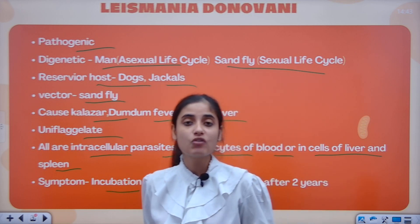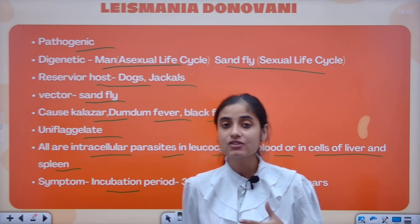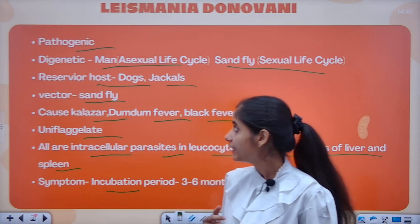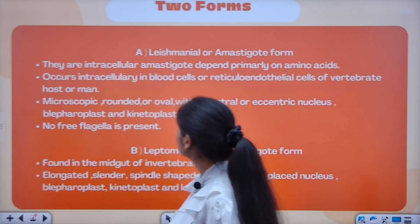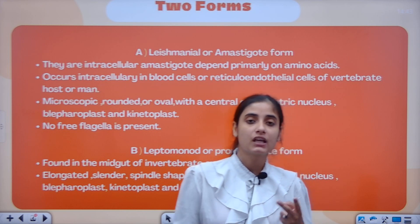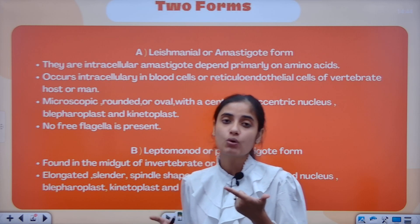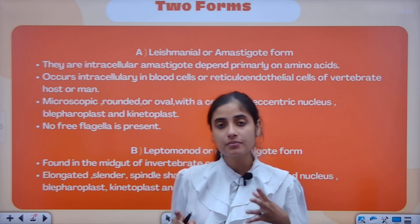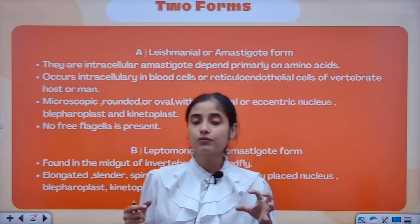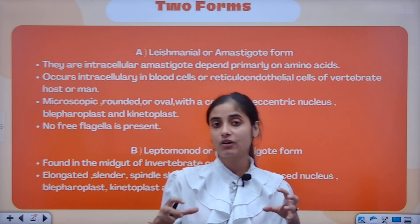In 3 to 6 months, or up to 2 years, you will come to know that this disease has occurred. Now, Leishmania has two forms: one is the Amastigote form and the other is the Promastigote form. The Amastigote form is found in vertebrates and the Promastigote form is found in the sandfly.